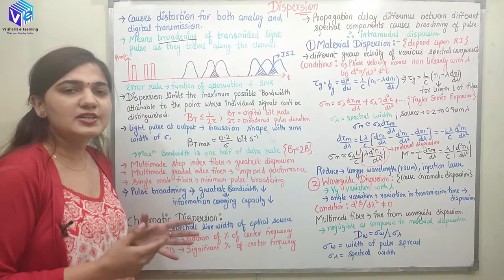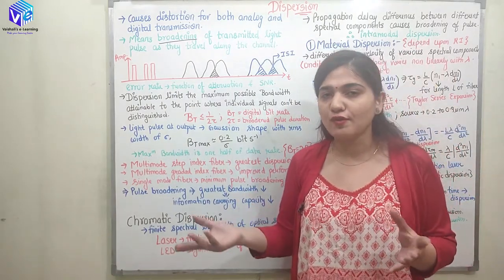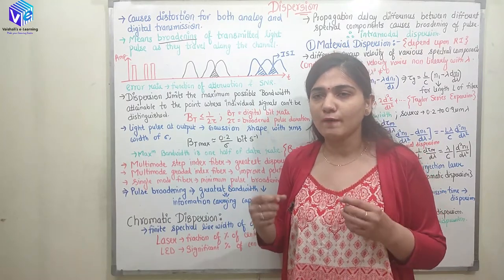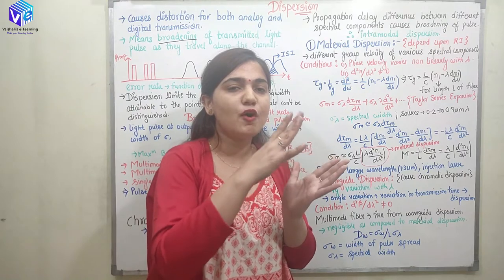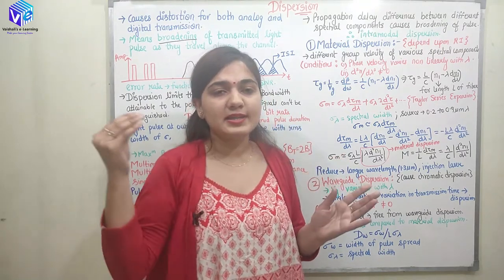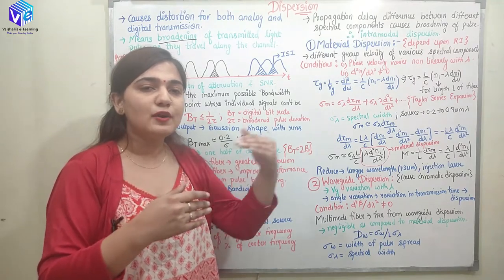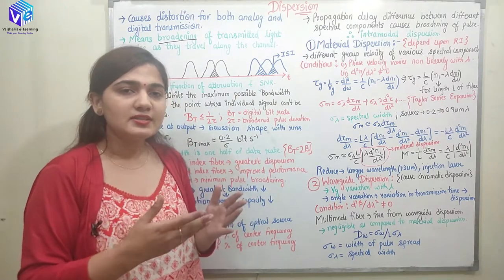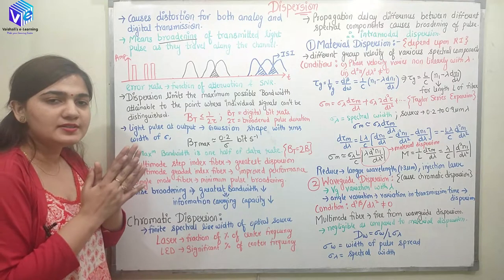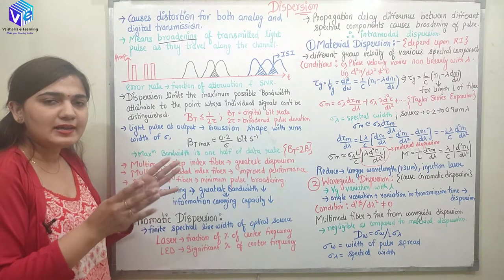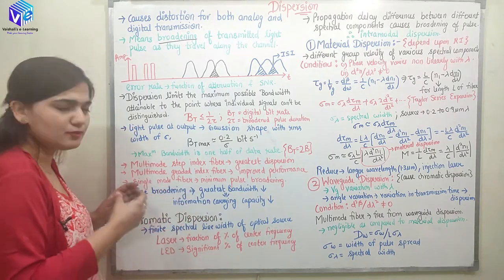Coming to the first type of dispersion — chromatic dispersion. Chromatic is the word associated with light, referring to different colors of light. When light passes through a prism, the prism decomposes it, giving various wavelengths present inside the incident light. Different wavelengths travel at different velocities, and this is a very good example of chromatic dispersion. The light spreads out into its seven components — VIBGYOR — as they pass through the prism. This is called chromatic dispersion.